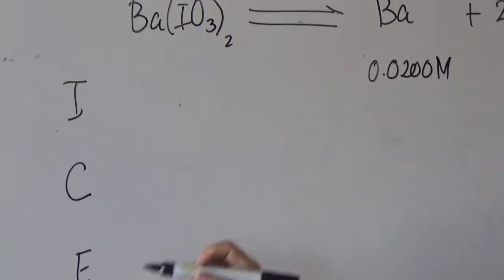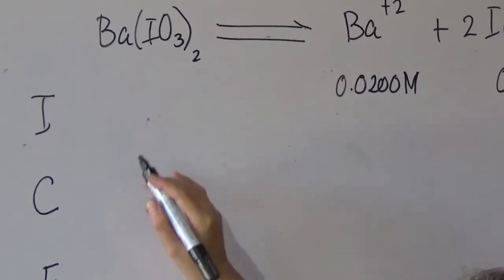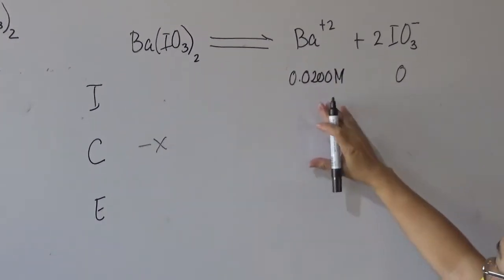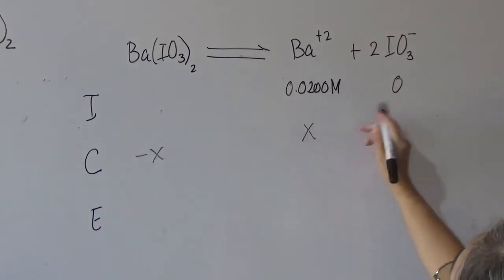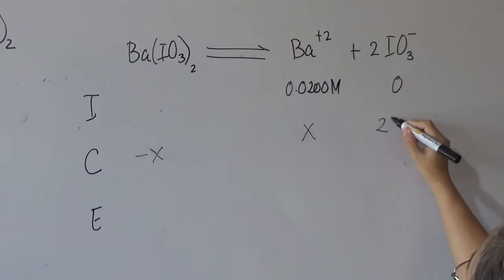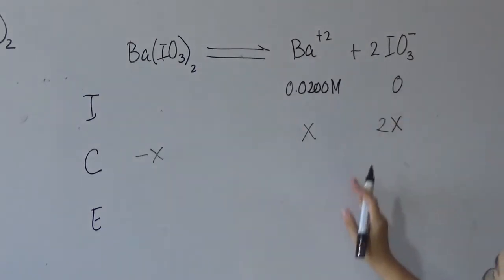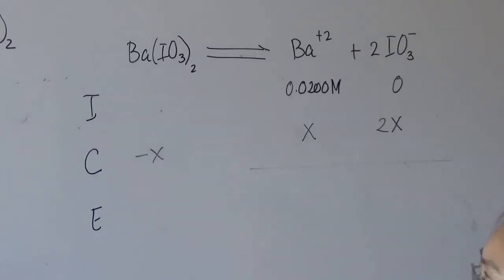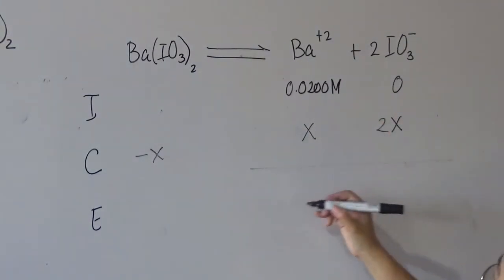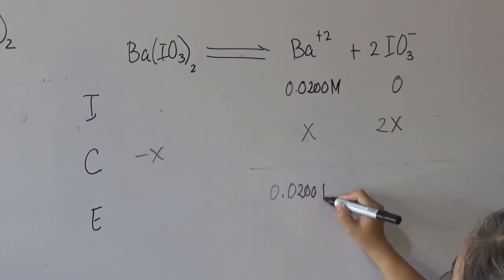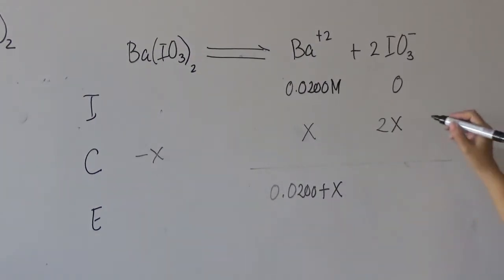For the Change row: the barium ion changes by +X, and iodate changes by +2X since there are 2 moles of iodate per formula unit. At equilibrium, the concentration of barium ion is (0.02 + X) and iodate is 2X.